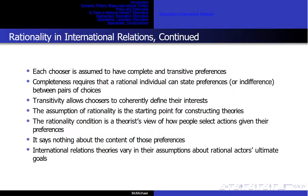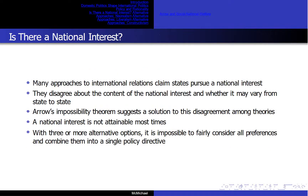International relations theories vary in their assumptions about rational actors' ultimate goals. We need to ask: is there a national interest? Many approaches to international relations claim states pursue a national interest, but they disagree about its content — realism emphasizes power, neorealism survival, liberalism prosperity, and power transition theory focuses on control over rules of international interaction. Arrow's Impossibility Theorem suggests a national interest is not attainable most of the time. With three or more alternative options, it is impossible to fairly consider all preferences and combine them into a single policy directive.